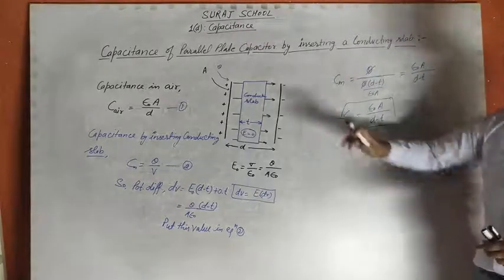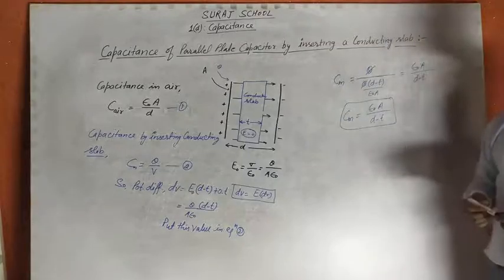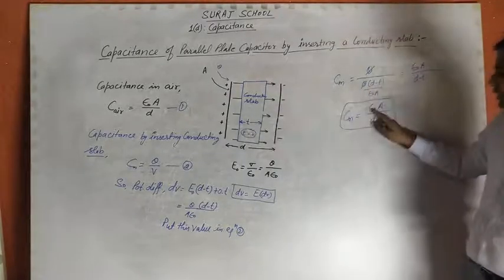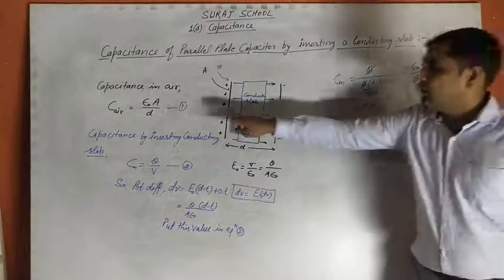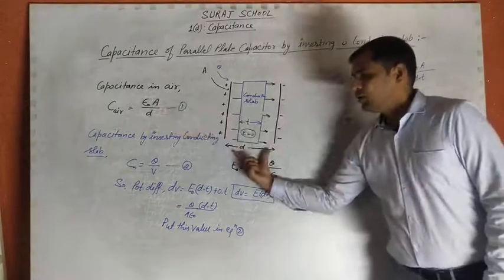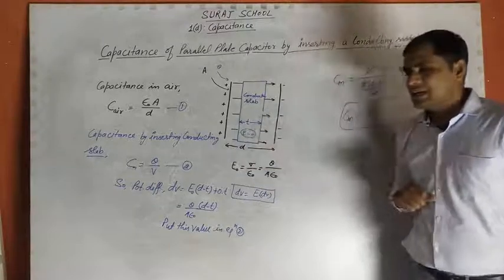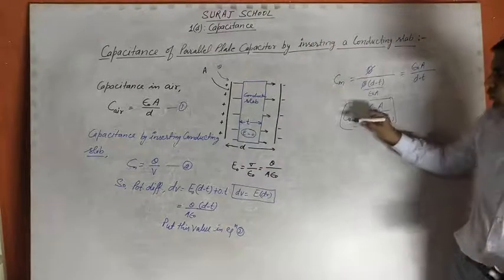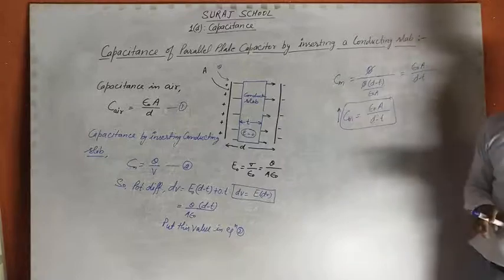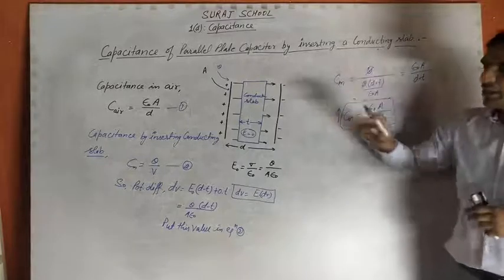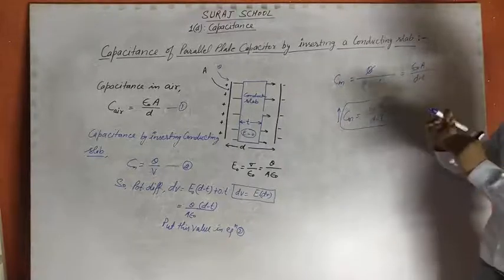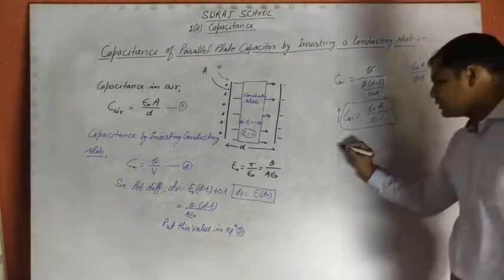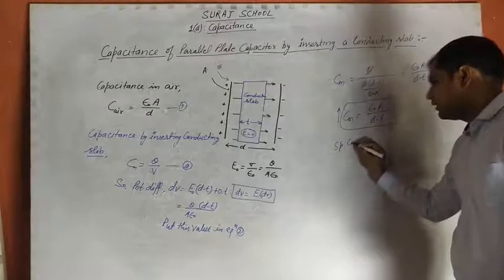Looking at this result: the capacitance with the conducting slab is Cm = ε₀A / (D − T), whereas the capacitance in air was C₀ = ε₀A / D. Since the denominator (D − T) is less than D, the capacitance with the conducting slab is greater than the air capacitance.